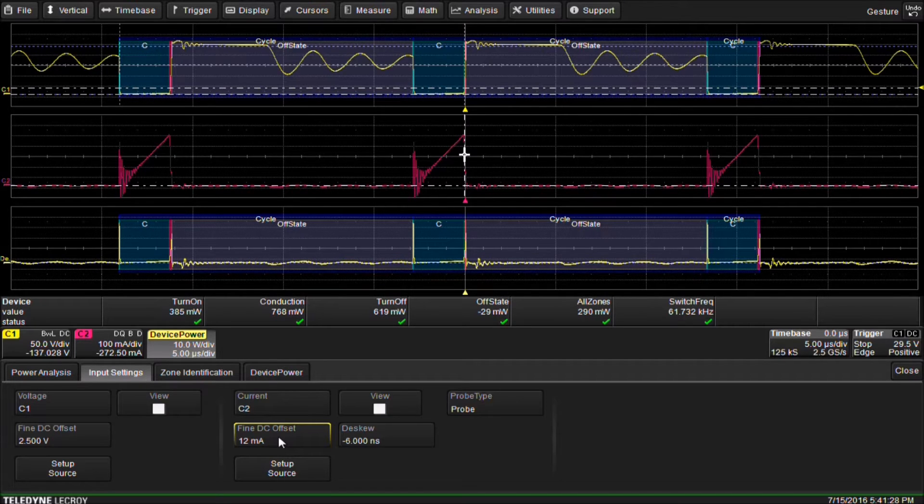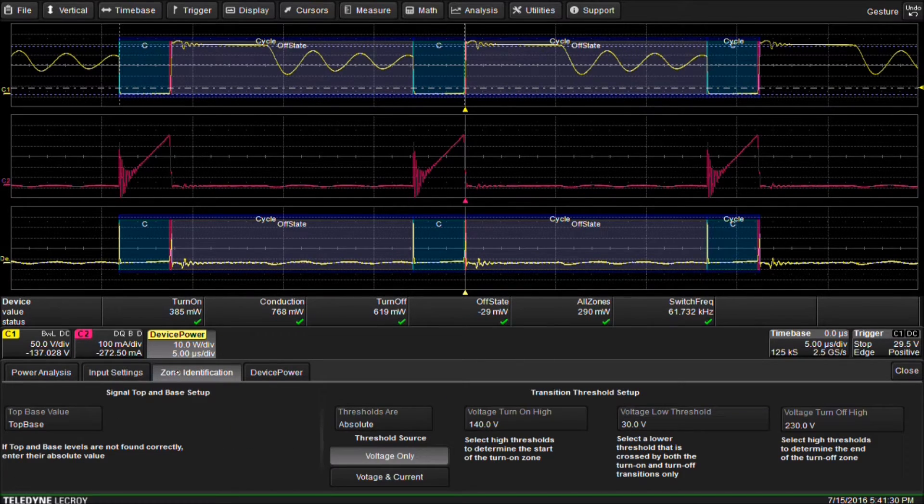The final step in the setup is to set the Zone Levels. We select the Zone Identification tab and the Turn On High Level, the Voltage Low Threshold and the Turn Off High Level are defined.